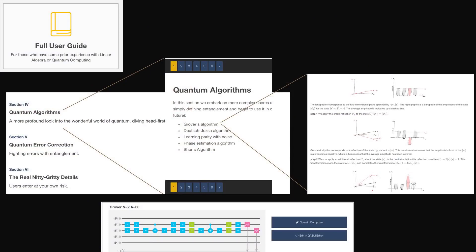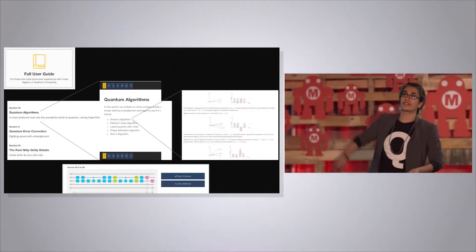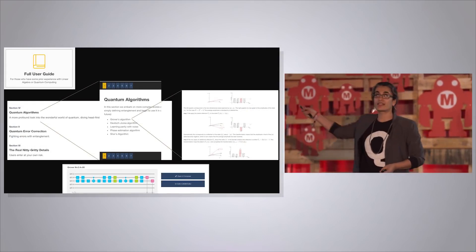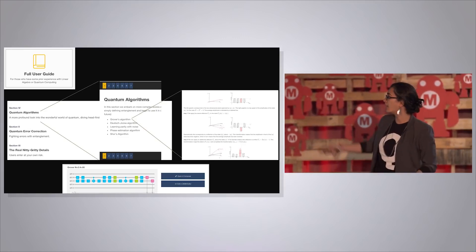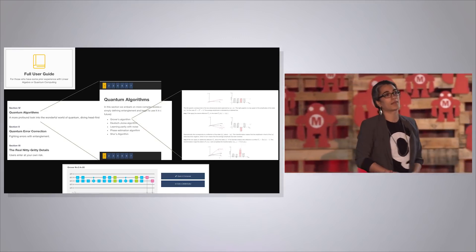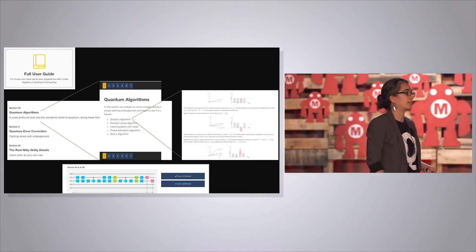Once you get through the beginner's guide and you're really keen, go into the full user guide. This shows you some of the algorithms we enable you to learn about. If you click into Grover's algorithm, you get a whole derivation of what's going on in that algorithm — how to think about that quantum interference and amplitude amplification, and the sequence of gates you need to implement Grover's algorithm on the real device. You can go in and actually implement that algorithm on a real quantum computer.